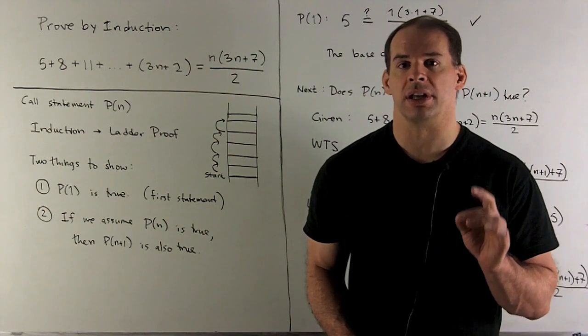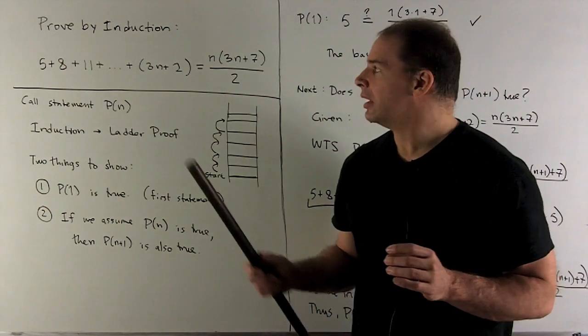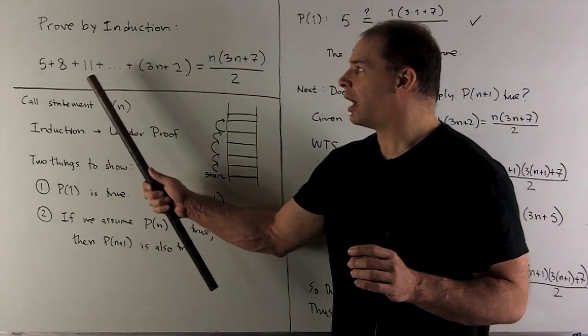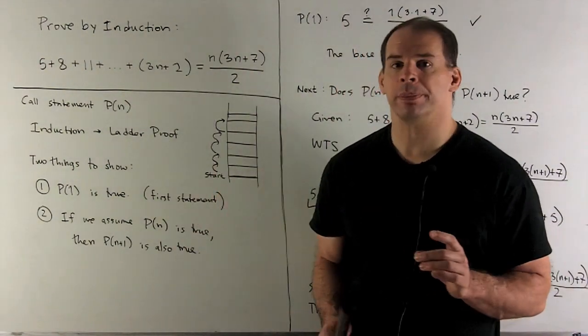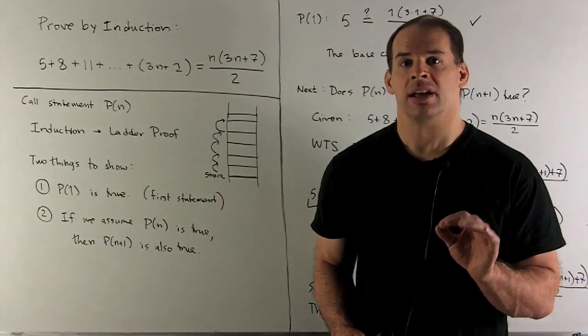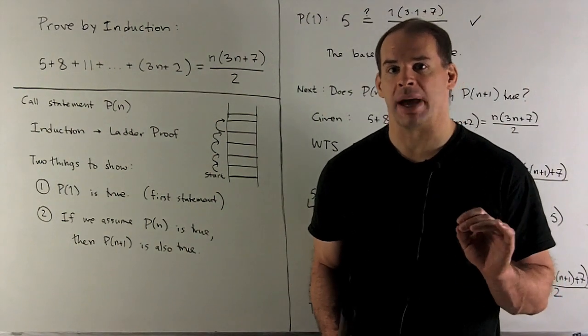Prove the following statement using induction. We have 5 plus 8 plus 11 up through 3n plus 2 equals n times 3n plus 7 divided by 2.